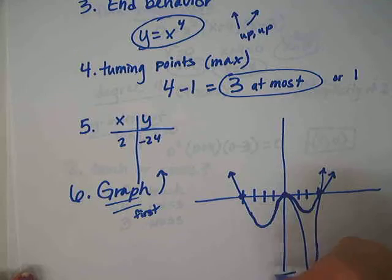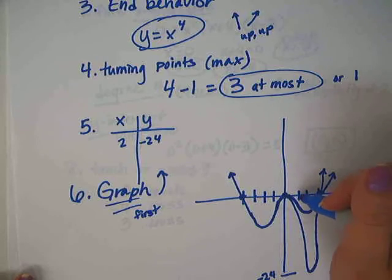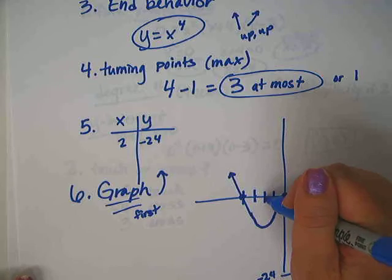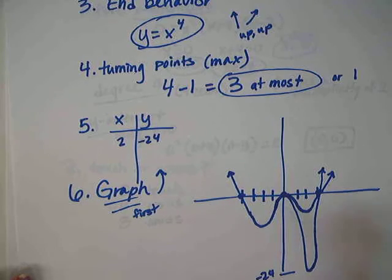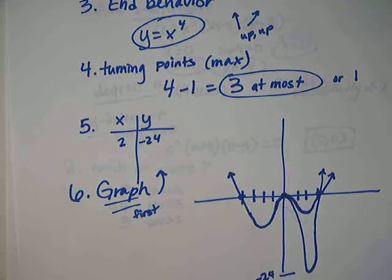At x equals 2, y is negative 24, so the graph goes way down. You could also plug in x equals 1, negative 1, negative 2, or negative 3 — I'd suggest negative 2 to get an idea of how low that local maximum dips. You don't need your graph to be perfect; you just need to know in general what it's going to look like. And you're done.